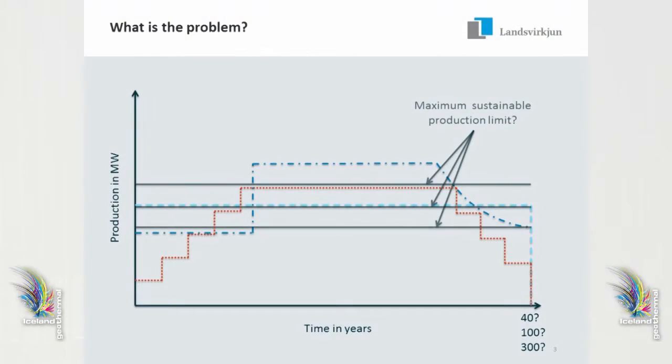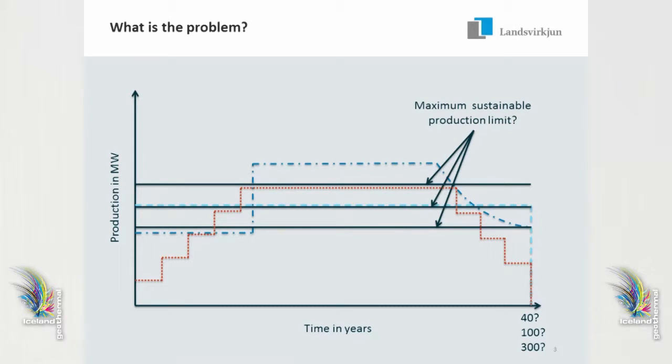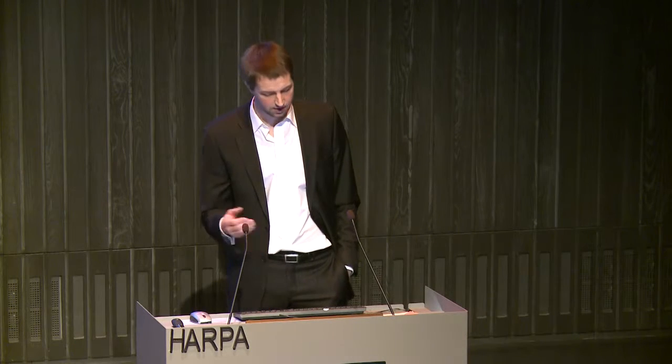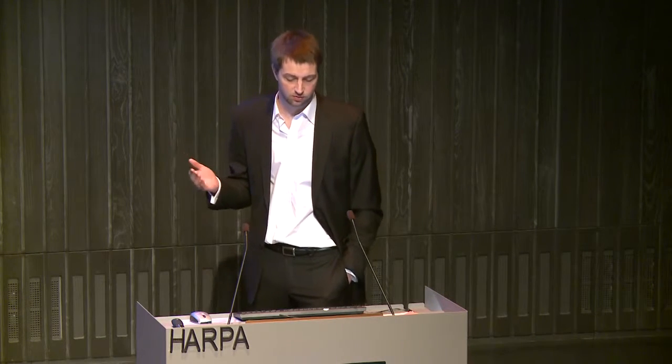Regulatory or legislative guidelines push us to try to produce in a sustainable manner, and that's a good philosophy. But the problem is that we don't really know what the sustainable production limit is beforehand. It's really hard to measure, and we can't really know it until we've produced from the reservoir for a long time. It's also rather poorly defined what the exact sustainable limit is. In my opinion, the sustainable production limit depends on how you produce from the reservoir — it will vary depending on the production strategy you took. So we have a bit of a chicken-and-egg problem.